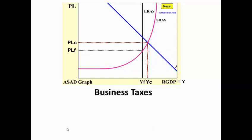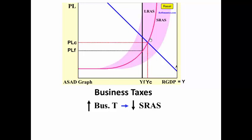This will then increase employment, or in other words, decrease unemployment. Now, if the economy is beyond full employment and the federal government wants to get it back to full employment, it could raise business taxes. If it raises business taxes, this will shift the short-run aggregate supply curve to the left.